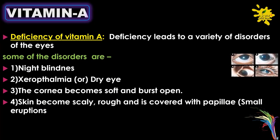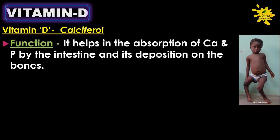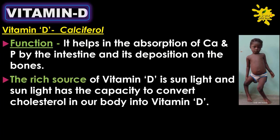In Vitamin A deficiency, the cornea becomes soft and may burst open, and the skin becomes scaly, dry, and rough and is covered with papules. Vitamin D: the chemical name is calciferol. It helps in the absorption of calcium and phosphorus by the intestine and their deposition on the bones. The richest source of Vitamin D is sunlight, which converts cholesterol in our body into Vitamin D.